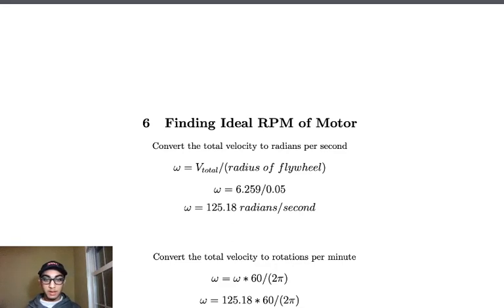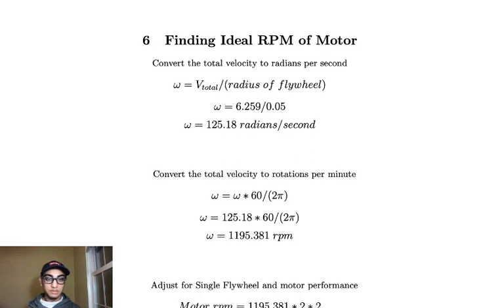And now, I'm going to convert that velocity to rotations per minute. And to do that, I multiply by 60, because there are 60 seconds in one minute. And I divide by 2 pi to convert the radians to rotations. And I get 1,195.381 rotations per minute.